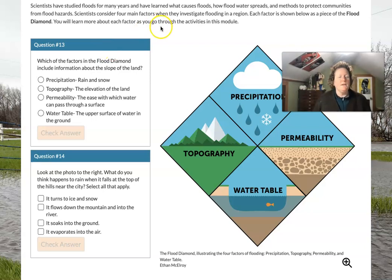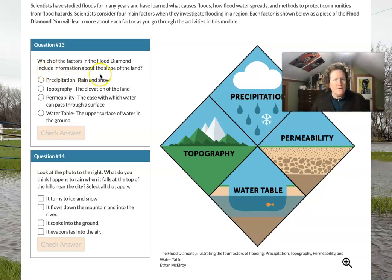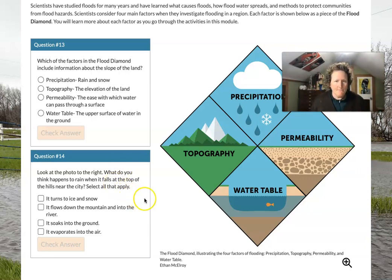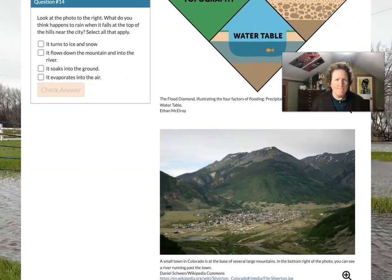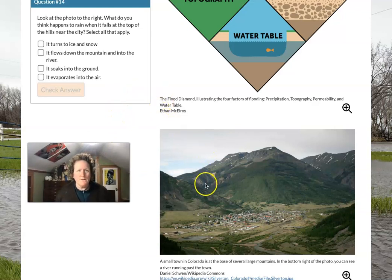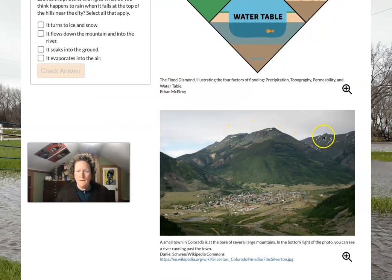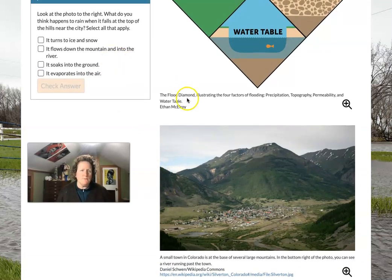You can answer this question on your own: which of the factors in the flood diamond includes information about the slope of the land? Which one is telling you to look from the top down and figure out the shape of the land? Now we're going to look at a photo — what do you think happens to rain when it falls on the top of the hills near this city? Does it flow down the mountains to the river? Does it soak into the ground or evaporate into the air? You can come up with your own answer and check it until you get it correct.